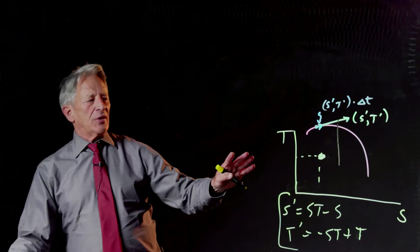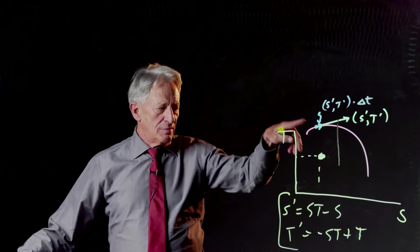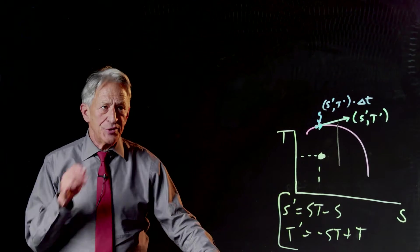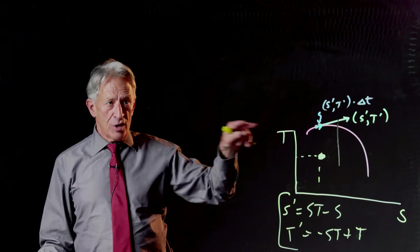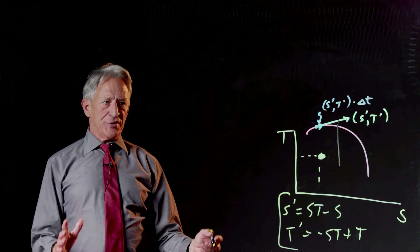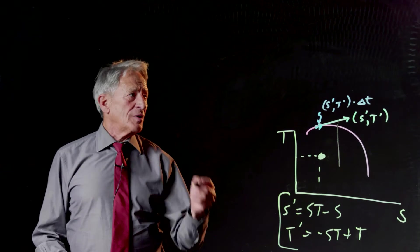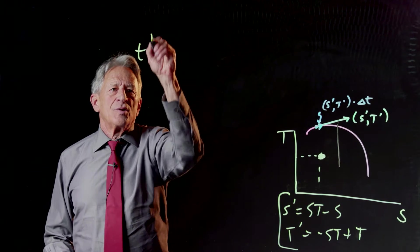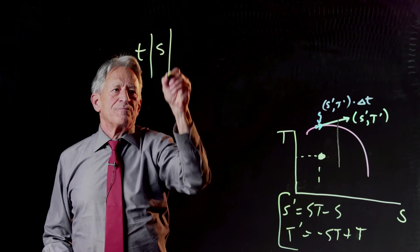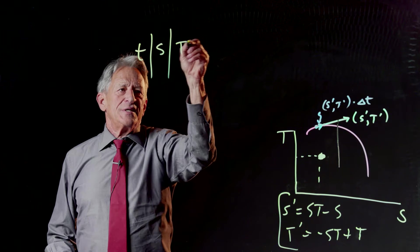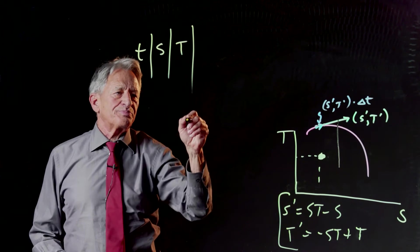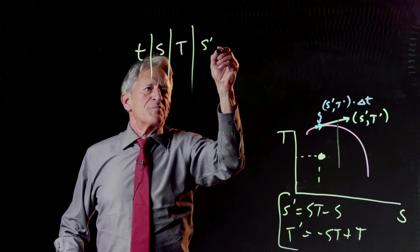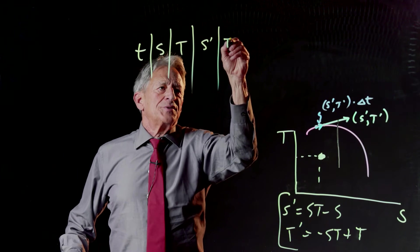So the spreadsheet calculation of the Euler's approximation to the 2-D curve is going to have more columns, but it's basically the same idea. We're going to have a t, we're going to have an s, we're going to have a t for tuna, we're going to have s prime, t prime.